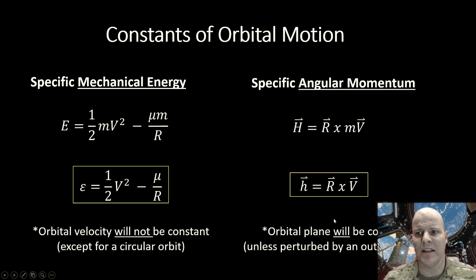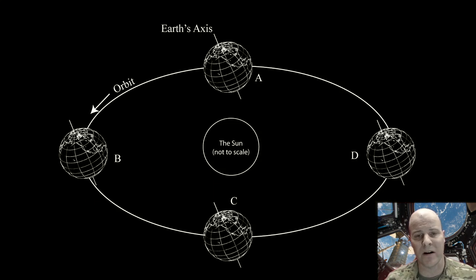And notably, this orbital plane is going to be constant unless it's going to be perturbed by an outside force, which will come into play when we start talking about the implications of the restricted two-body equation of motion later. But this can perhaps best be illustrated with just thinking about our Earth.